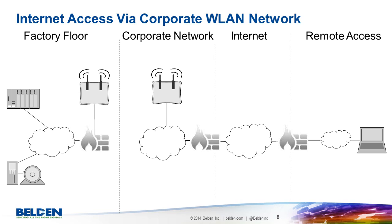In the second scenario, the factory floor network does not have a connection to the corporate network and therefore no internet access. So the connection is made using a wireless client on the factory floor connected to a wireless access point on the corporate network.